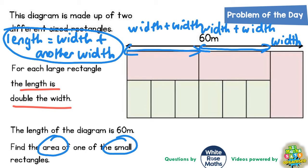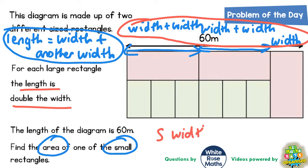Now we need to use a little bit of common sense. We've written the word width five times across the top here. So that means that five of these widths are equal to 60 metres.